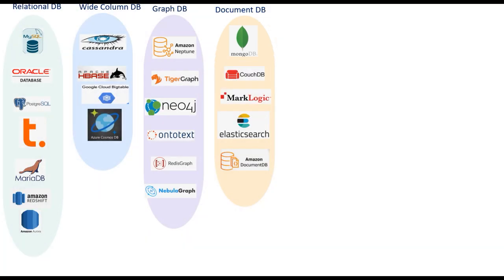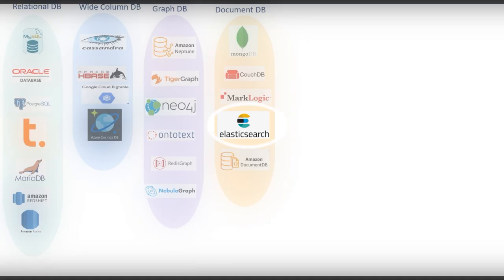Elasticsearch is another example of a Document DB that provides near real-time search and analytics for all types of data, whether you have structured or unstructured text, numerical data, or geospatial data.